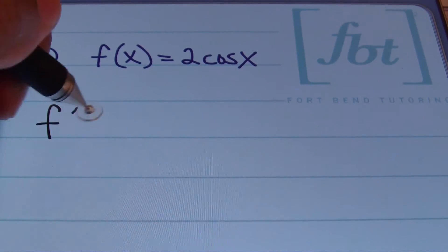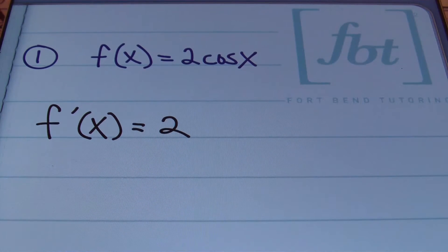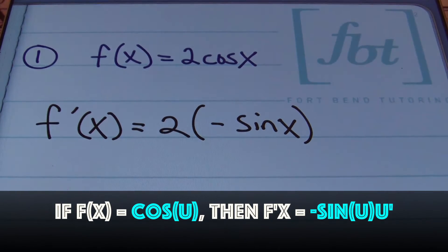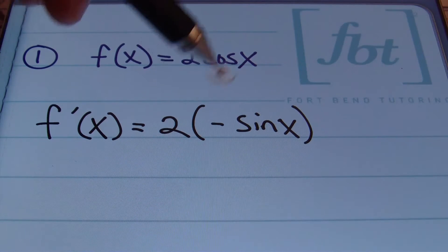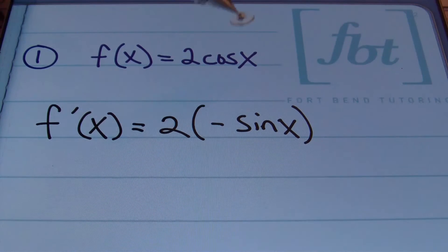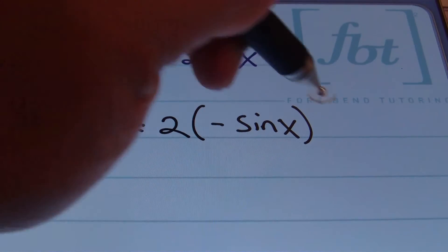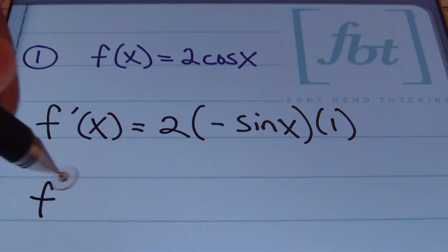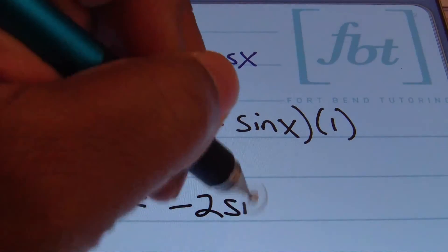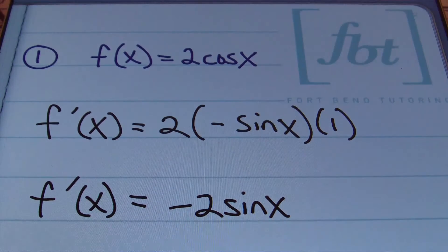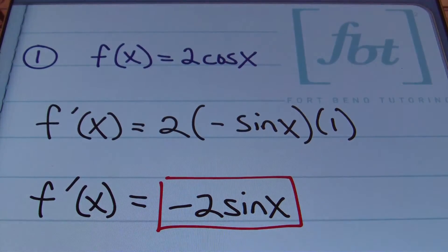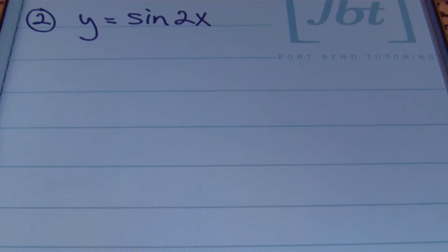The derivative is going to be 2 — bringing down that coefficient — and then the derivative of cosine x is negative sine x. Remember, the derivative of cosine x is negative sine x times the derivative of x, and since the derivative of x is 1, this simplifies to negative 2 sine x. That's your answer for problem one.